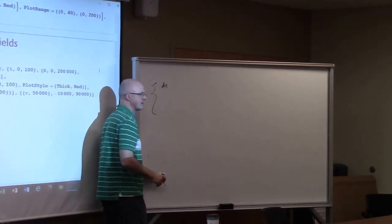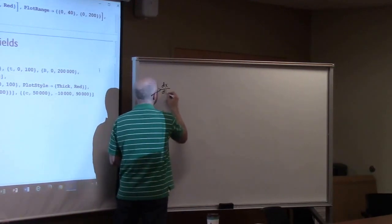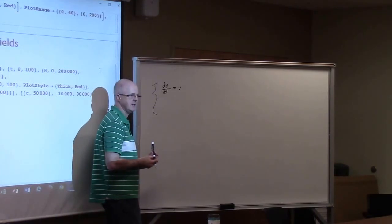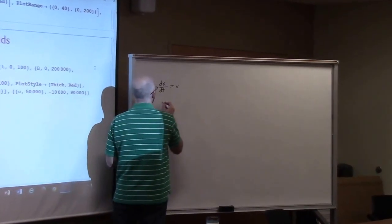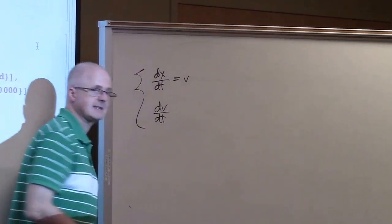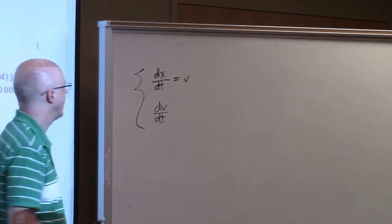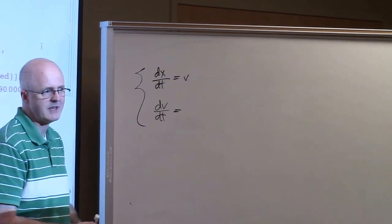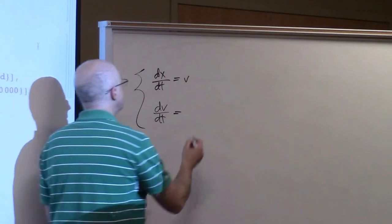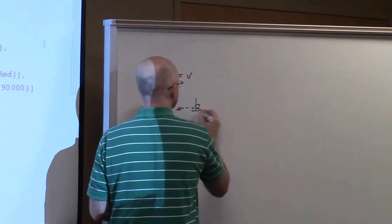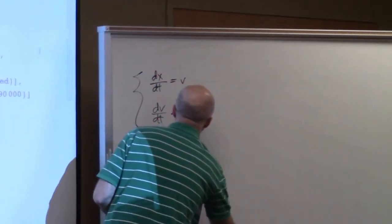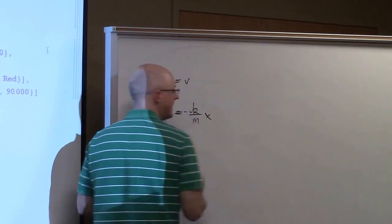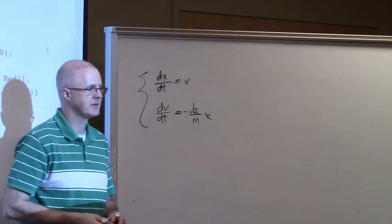X was the position of the mass back and forth. Its derivative is the velocity, so one of the equations in our system was dx/dt equals v. The derivative of the velocity is the acceleration, and we saw by Newton's second law that that was the force divided by m. The force coming from Hooke's law. The equation ended up being this negative k over m times x. So that's a system of differential equations.